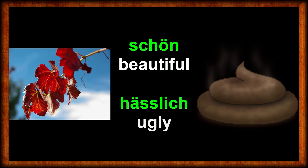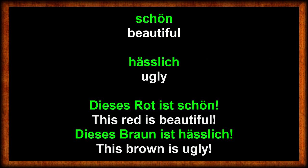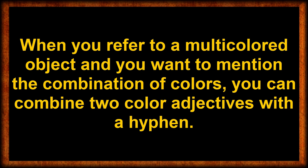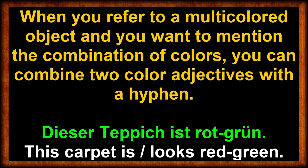When you like a certain color you might refer to it as being schön — beautiful. When you rather dislike a color, you might say it looks hässlich — ugly. Dieses Rot ist schön — this red is beautiful. Dieses Braun ist hässlich — this brown is ugly. When an object is made up of two different single colors, you can connect the two color adjectives with a hyphen. Der Teppich ist rot-grün — the carpet is red and green.